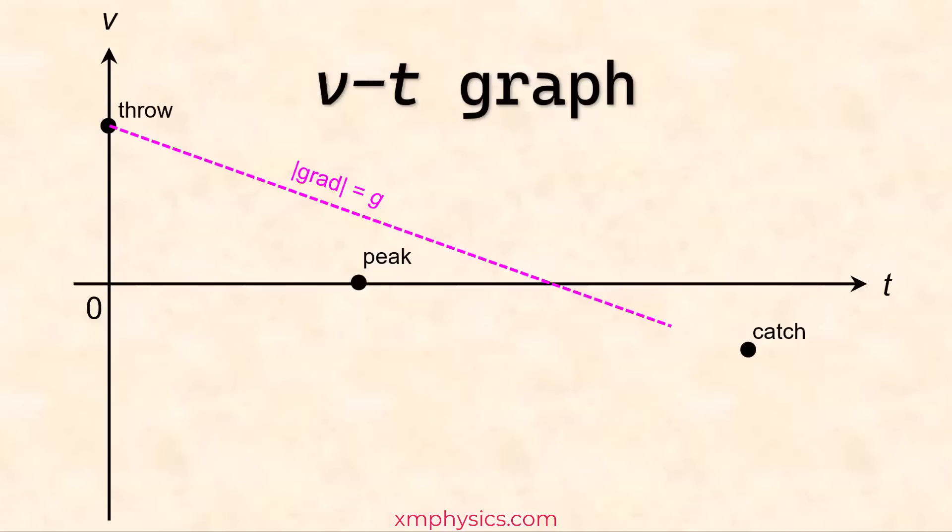So what does that mean? That means your VT graph should look like this. It starts off steeper than g, flattens out as it rises and the downward air resistance force weakens to become as steep as g when it's at the peak where the air resistance is zero. And then it continues to flatten out as it falls and as the air resistance strengthens.